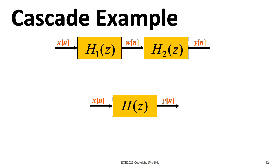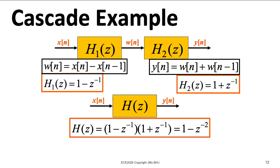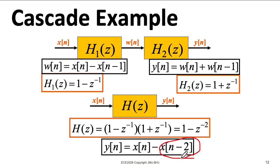Let's consider an example where the first system is a first-order difference, and the second system is a two-point running sum. If I look at the system functions of the individual systems, I can then multiply those together and see that I get something that looks like a first-order difference system, except it doesn't subtract the input one time unit in the past. It subtracts the input of two time units into the past. Notice I don't have any x in minus one term here, because if I look at the structure of this polynomial multiplication, the cross terms cancel.